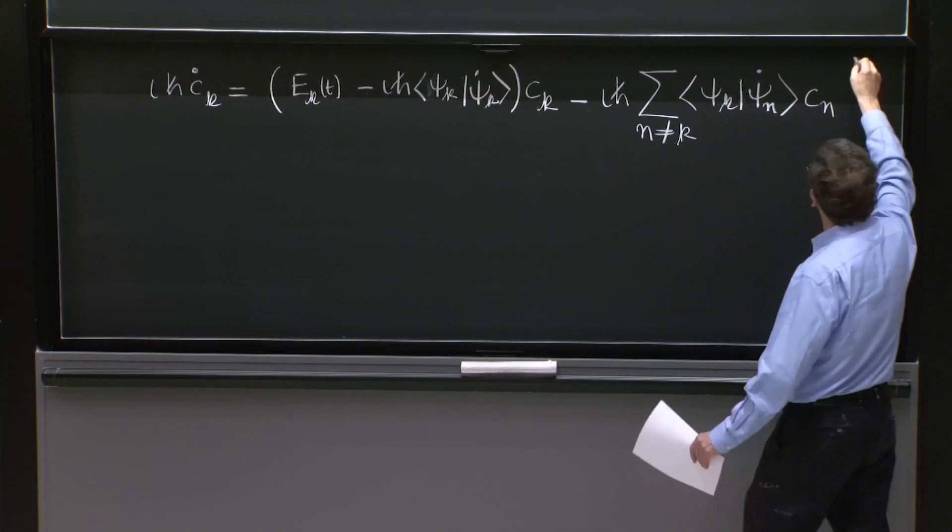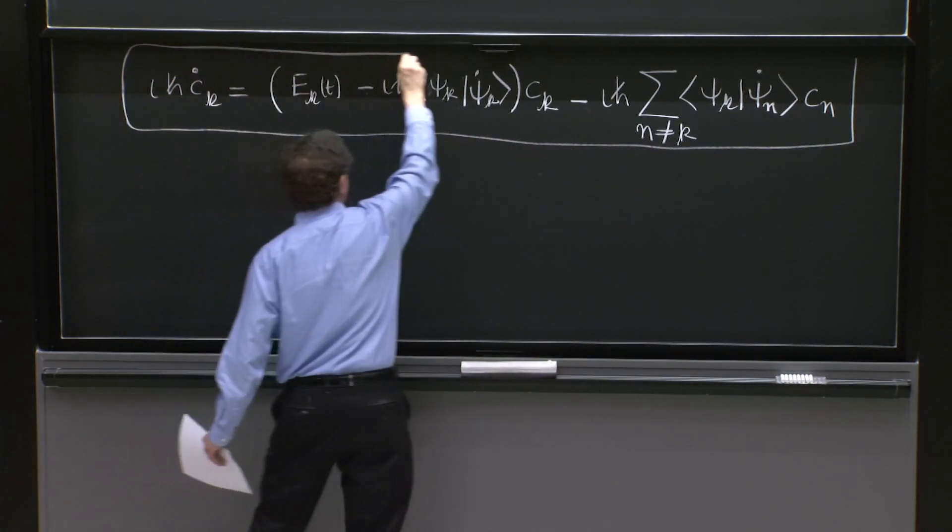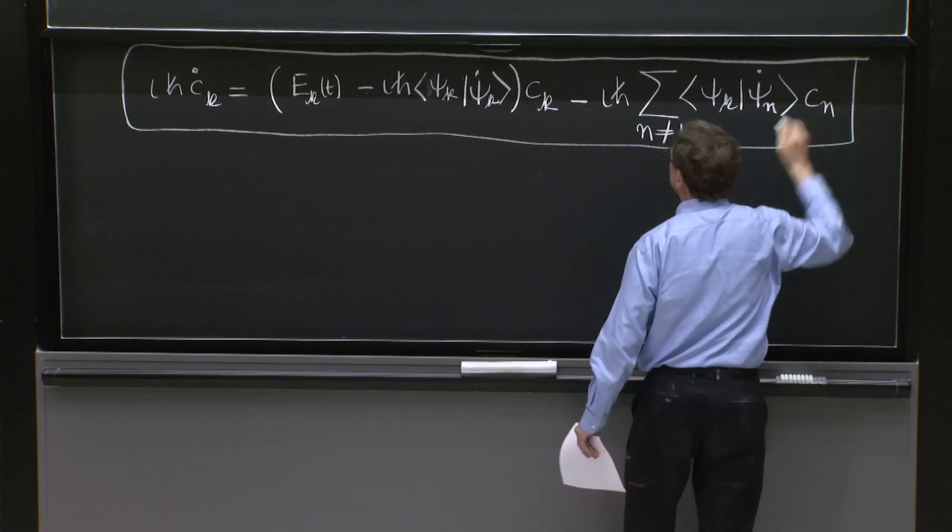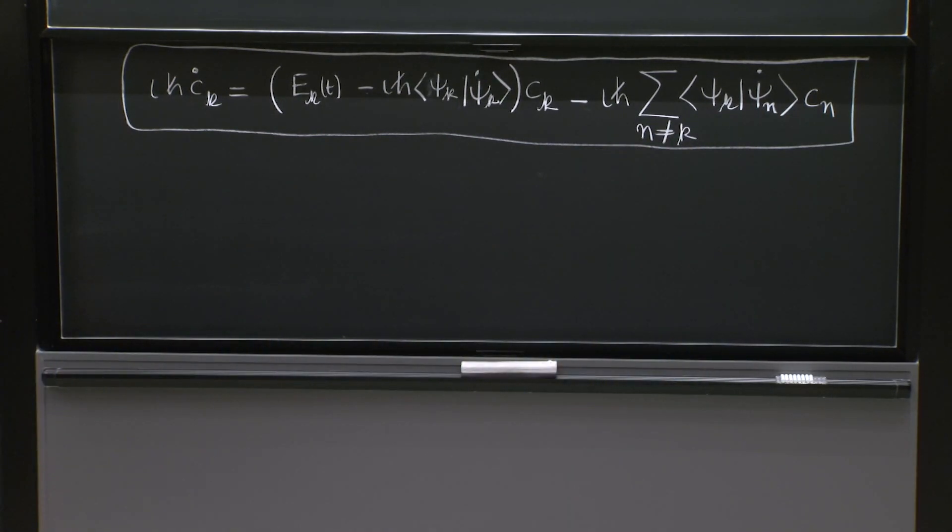And the last term now becomes minus i h bar the sum over n different from k psi k psi n dot cn. So this is the form of the equation that is nice and gives you a little understanding of what's going on.